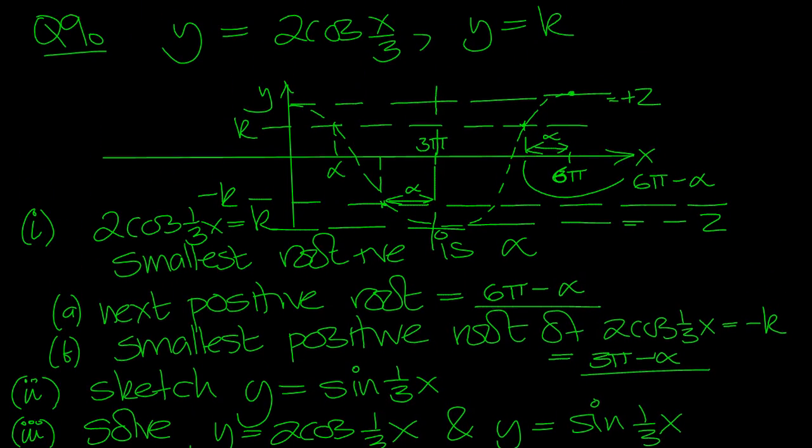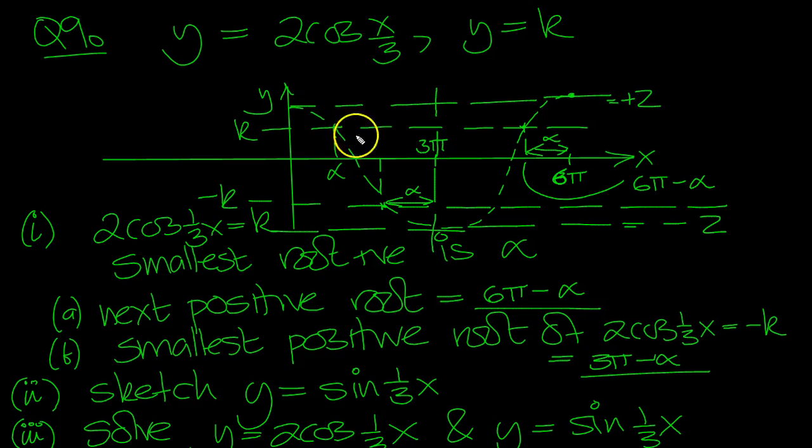Sketch y equals sine x over 3. So cos 2x over 3 goes through a complete process, so the sine will go through the complete up and down, down and up. There's the sine. This is the value of 2, so it would be at 1. So I'm going to draw it in a different color. If I mark off 1 here and then minus 1.